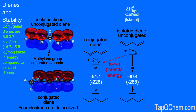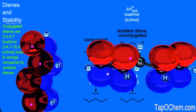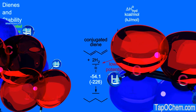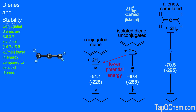We now have one more diene class to consider: allenes. When we hydrogenate allene, it releases a large amount of energy — 70.5 kilocalories per mole. This diene is over 10 kilocalories per mole higher in energy than the isolated diene.